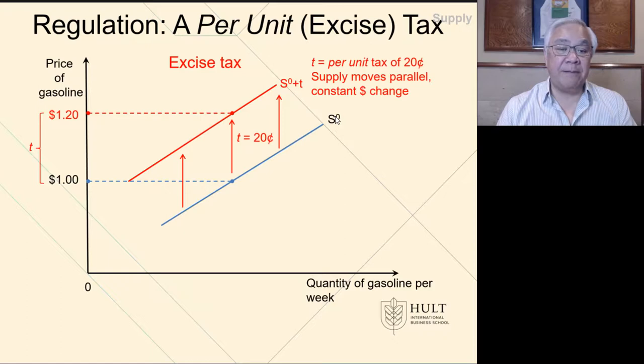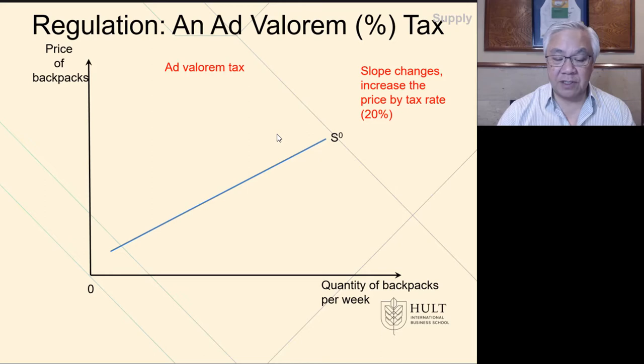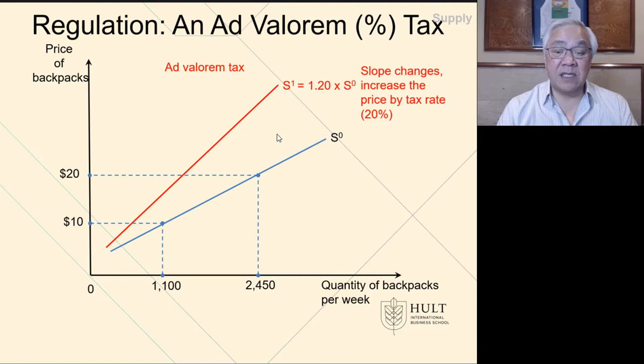Let's look at the taxes we discussed briefly. First is the per unit or excise tax. It shifts the supply curve in a parallel line because the tax is a fixed amount — for example, everything goes up by 20 cents. This shifts supply, which reduces the amount demanded because the price went up. Next is the ad valorem tax, which is a percentage. If it's a 20% tax, the slope increases by 20% for every unit purchased. The higher the price, the higher the tax, which is why the gap expands — because it's a percentage, not a fixed dollar amount.